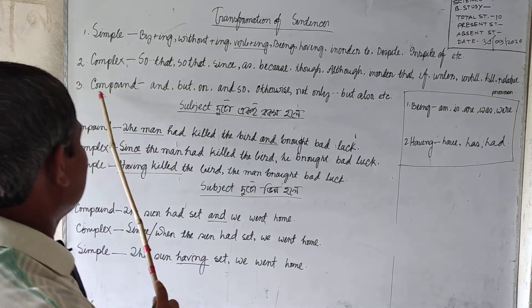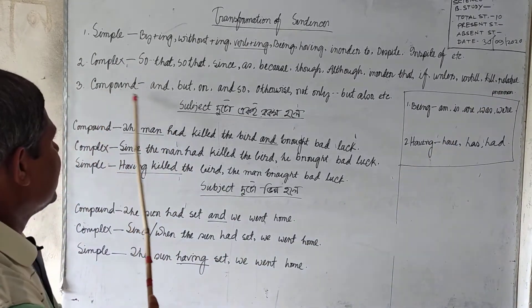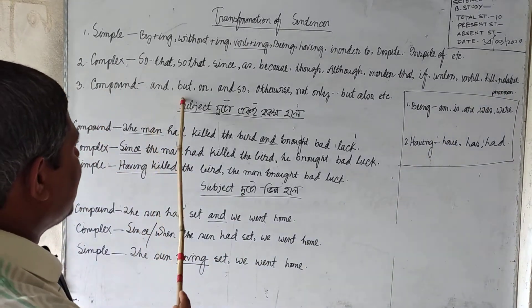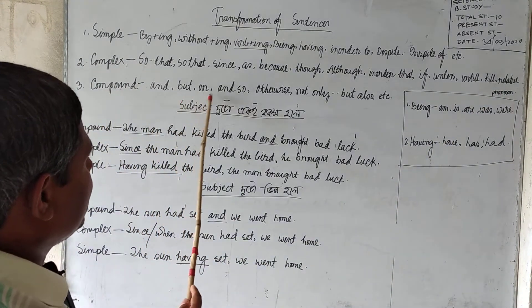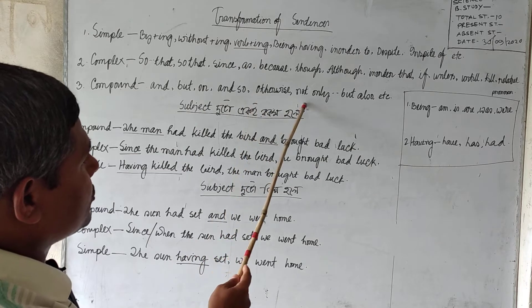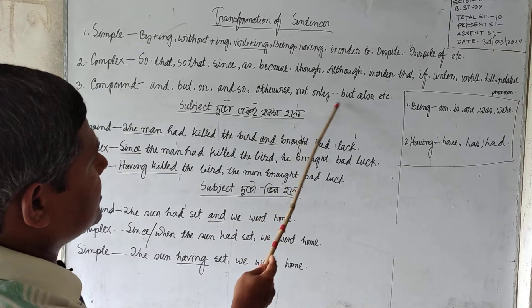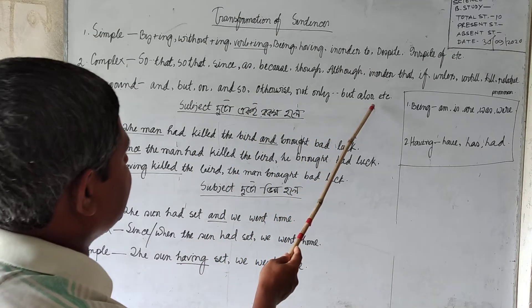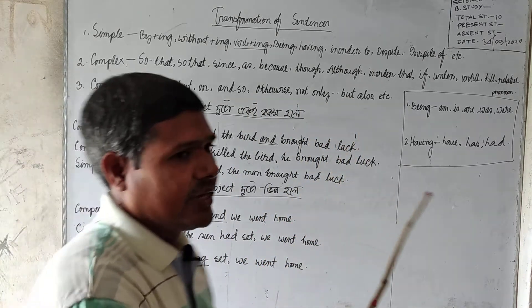Last, compound sentence connectors: and, but, or, and so, otherwise, not only... but also, and so on.